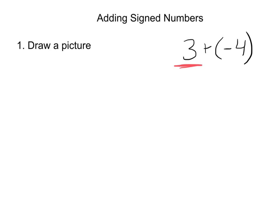We have a positive three, so that means we're just going to draw three positives — one, two, three. If you're asking how did you know the three was positive: any time a number has no sign, no positive or negative sign, it's automatically positive. Think back to elementary school — the number two was always a positive two. Numbers are always positive unless we specifically say they're negative. So the three became three positives.